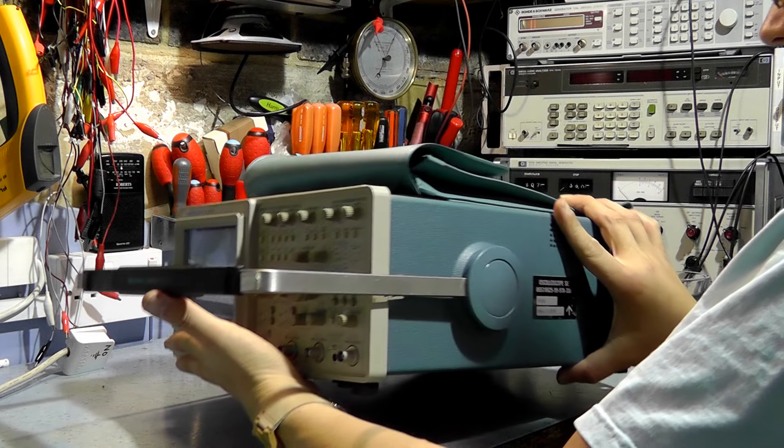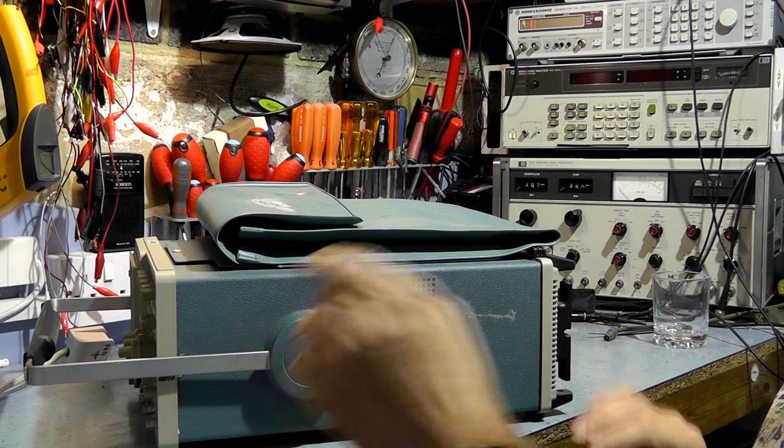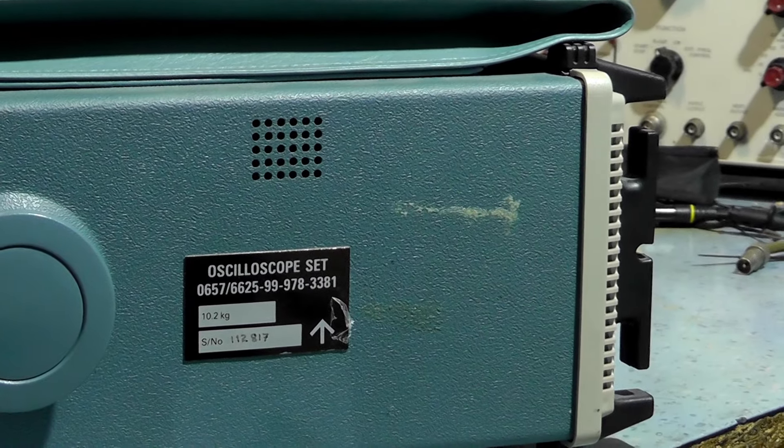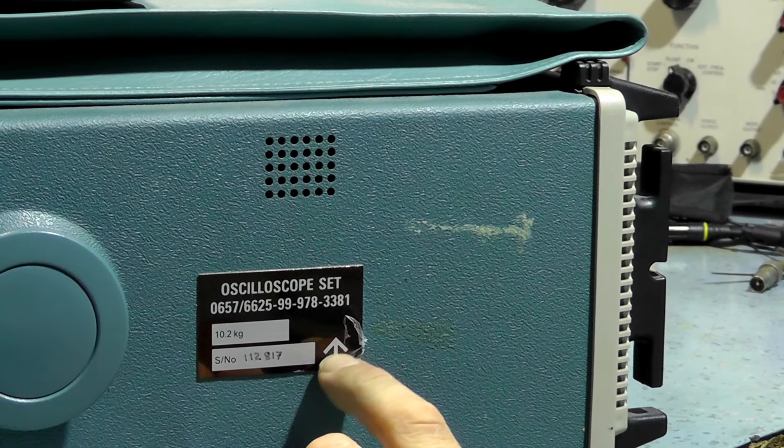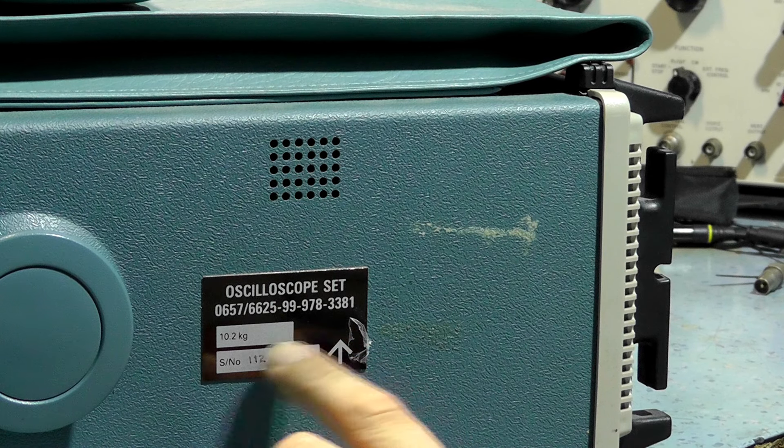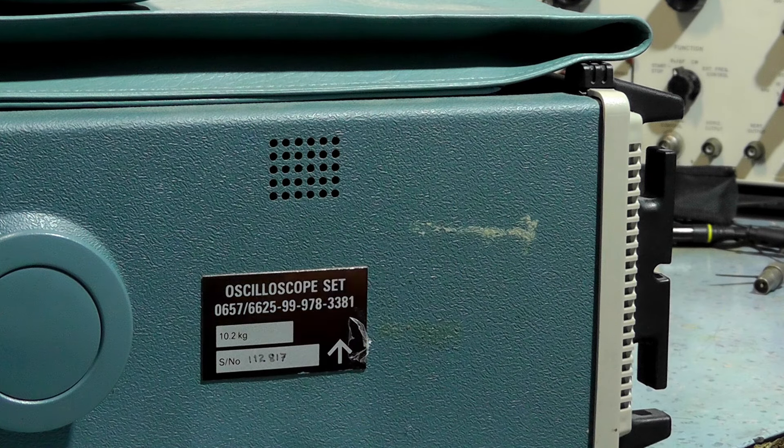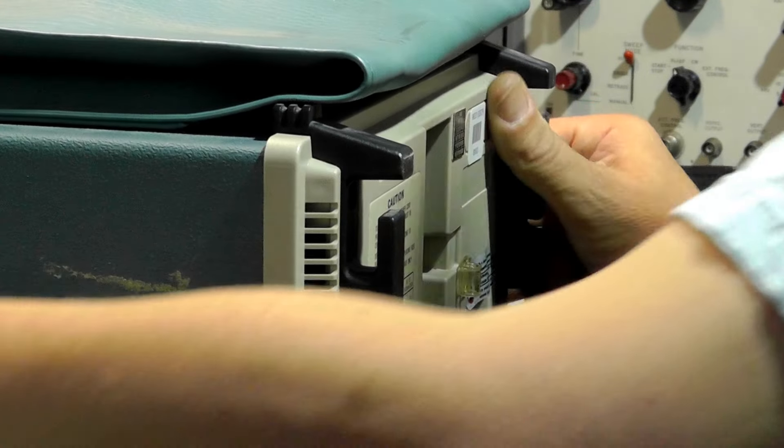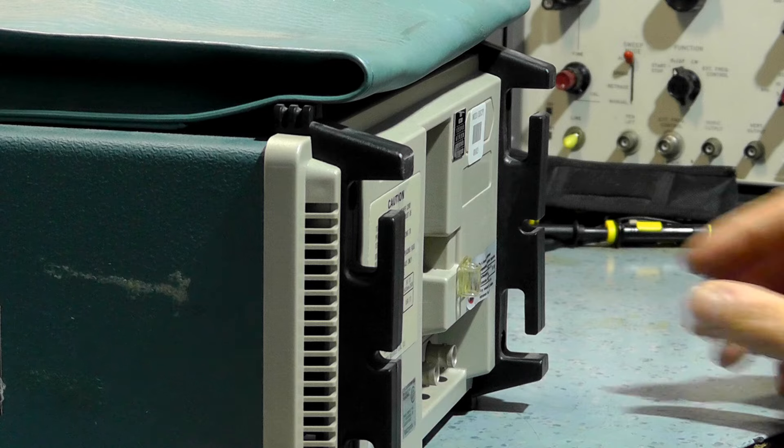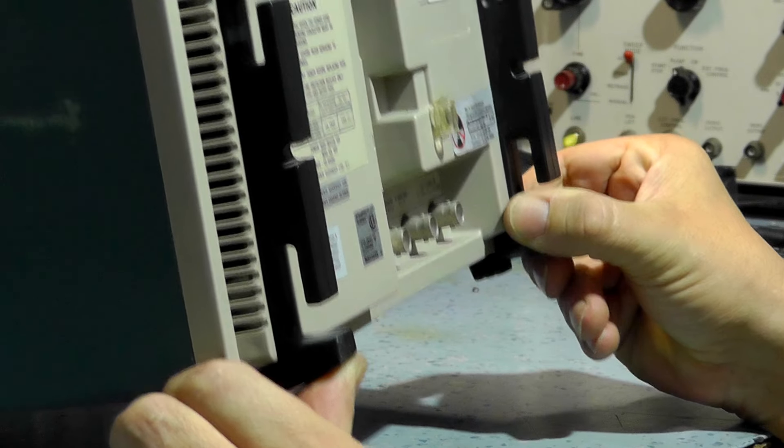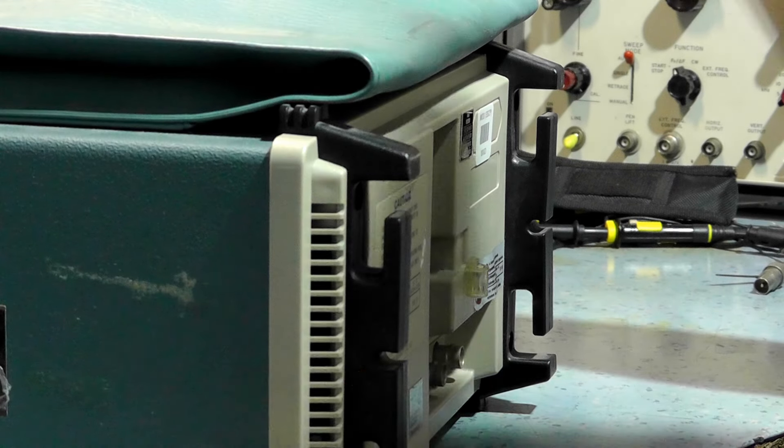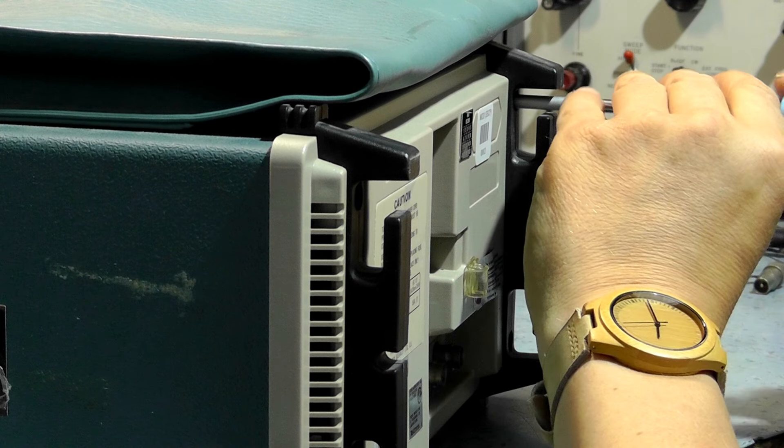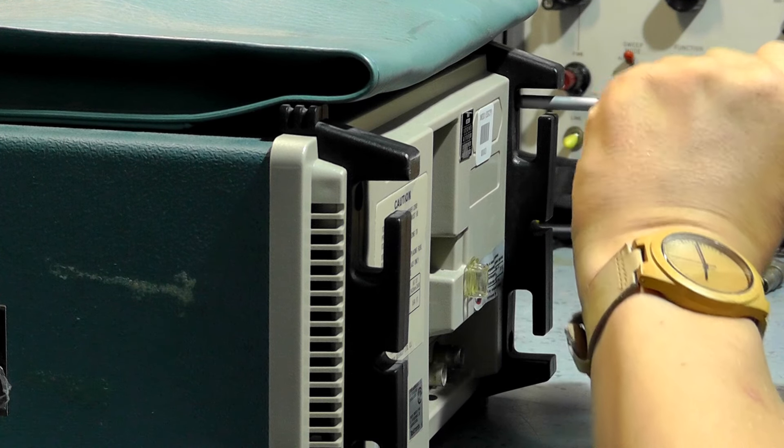You see here it's got the crow's foot, it's been used in an army base or something like that. It means it's been issued for the army. The oscilloscope set and the weight of it and the serial number. So the first thing I'll do, I'm going to put the screws out the back and just see if that did do any damage to any of the circuit board. Because I'm not going to power it up without having a look.